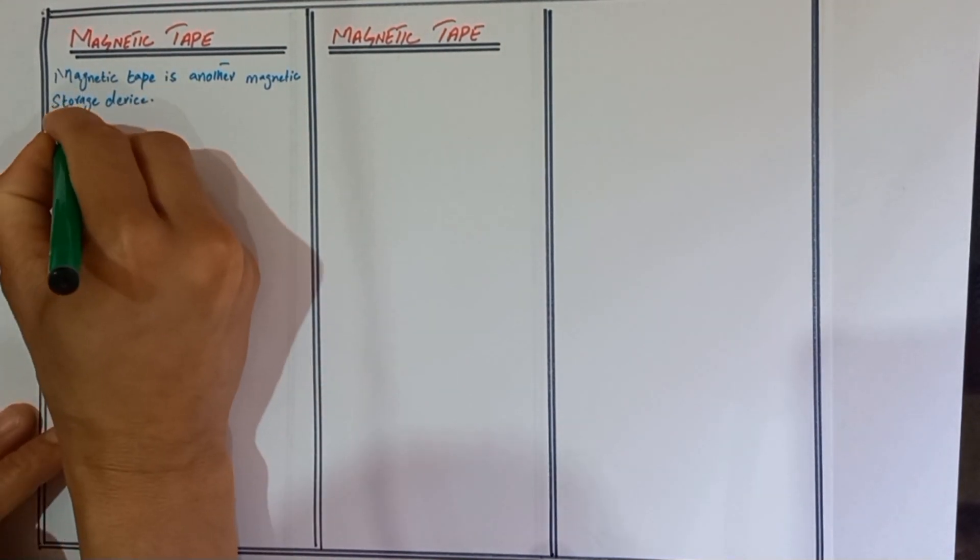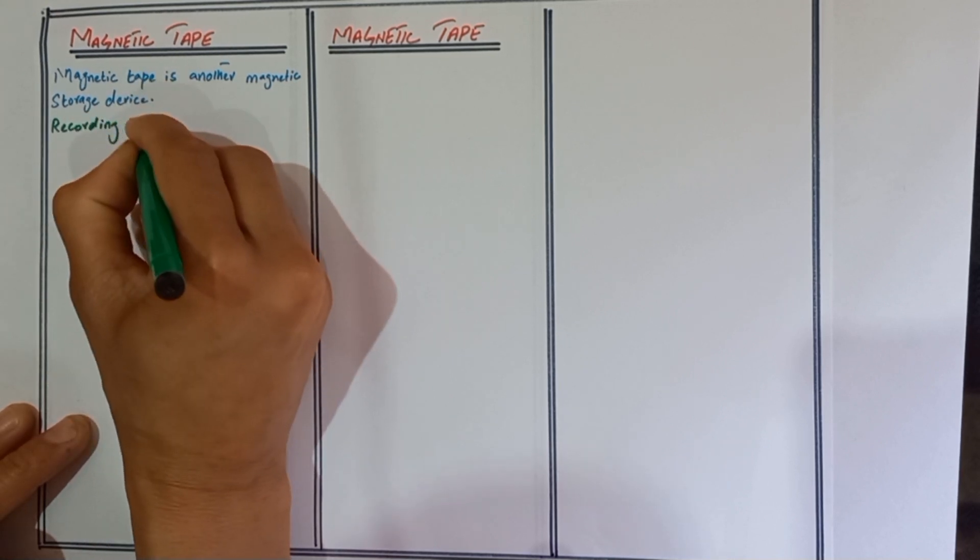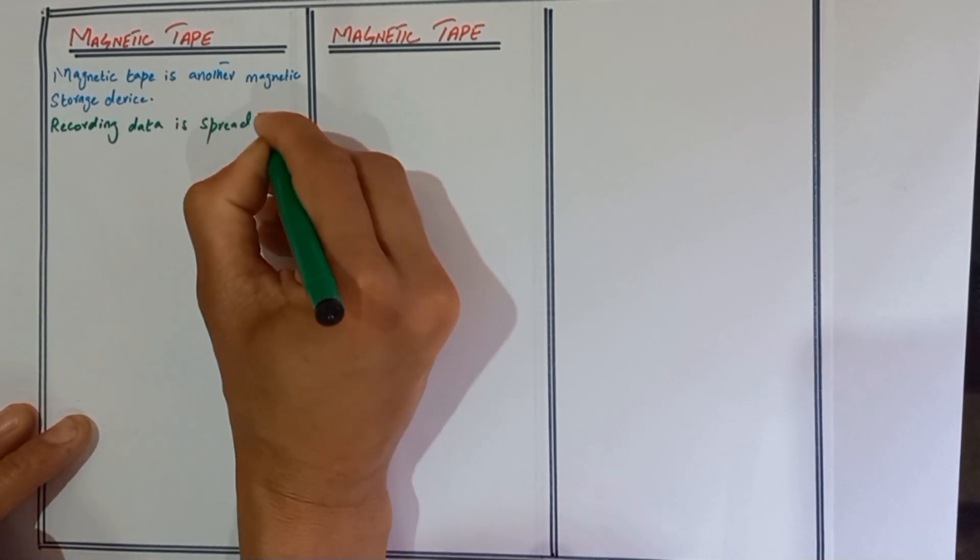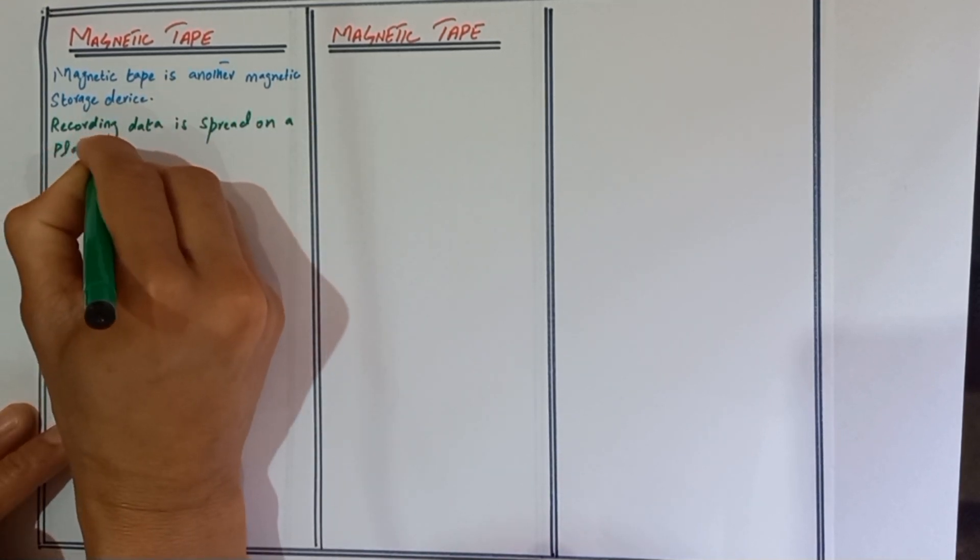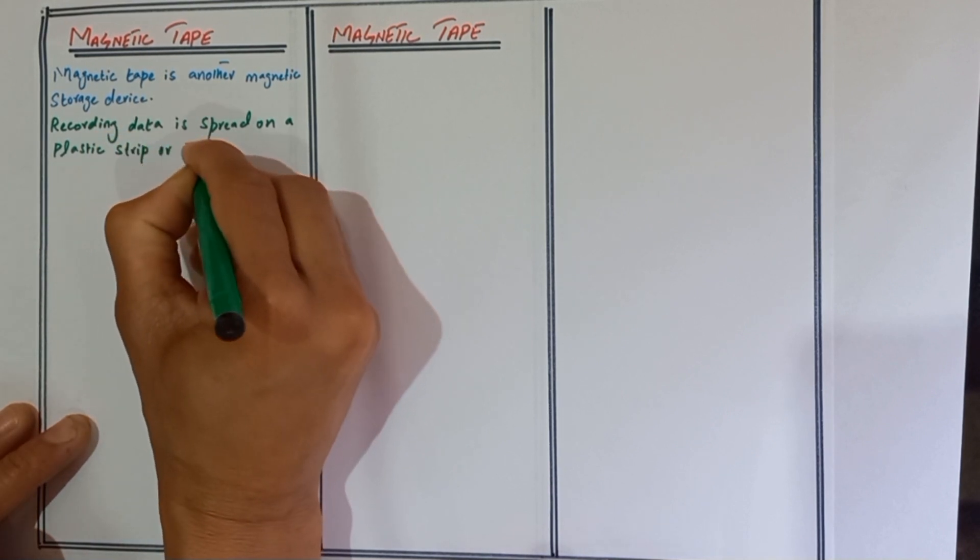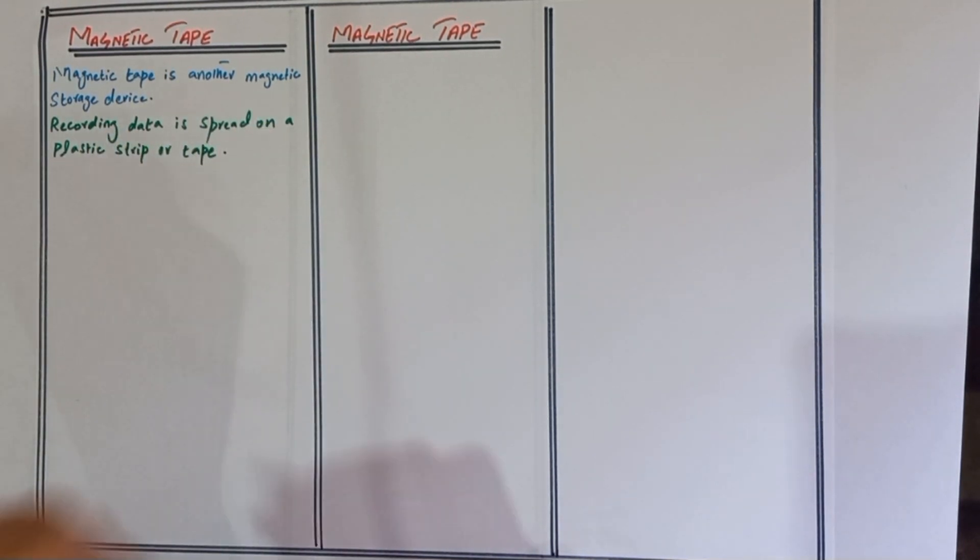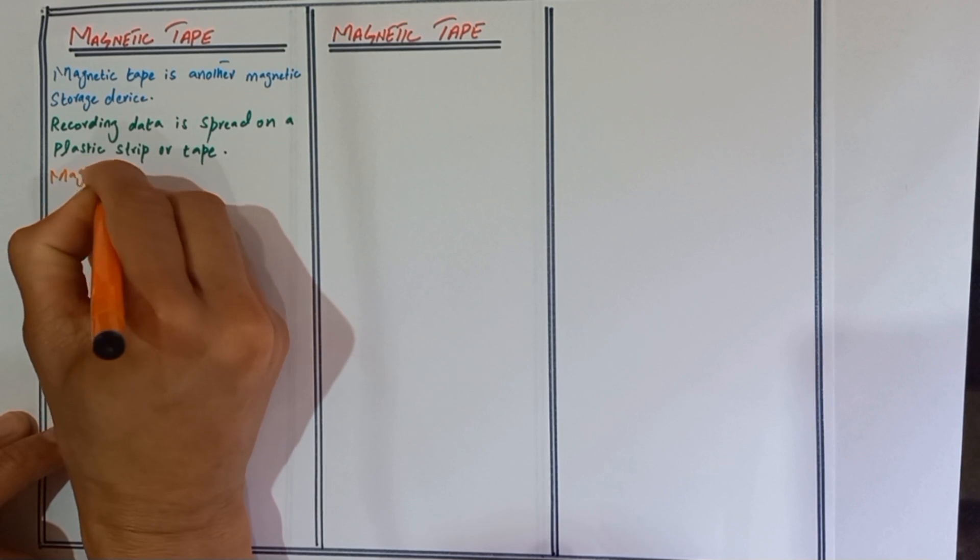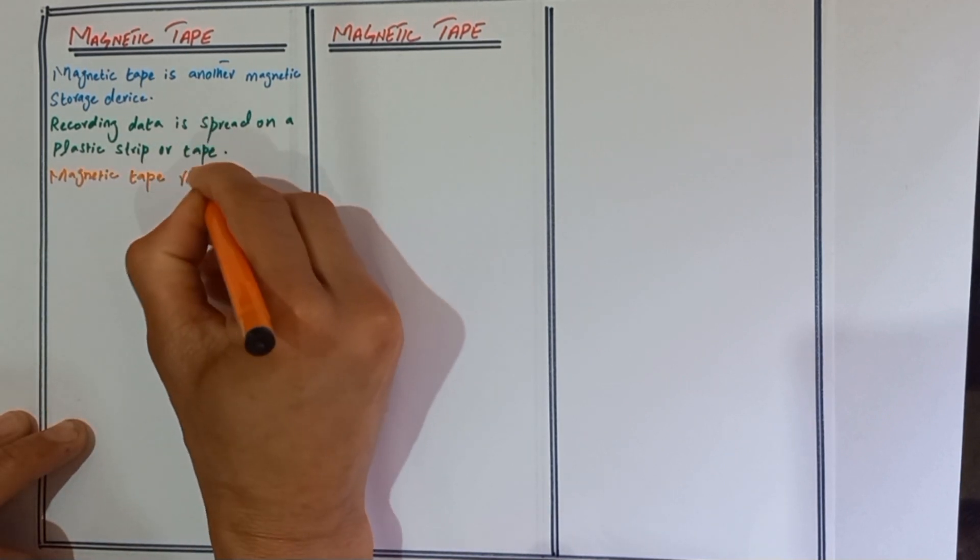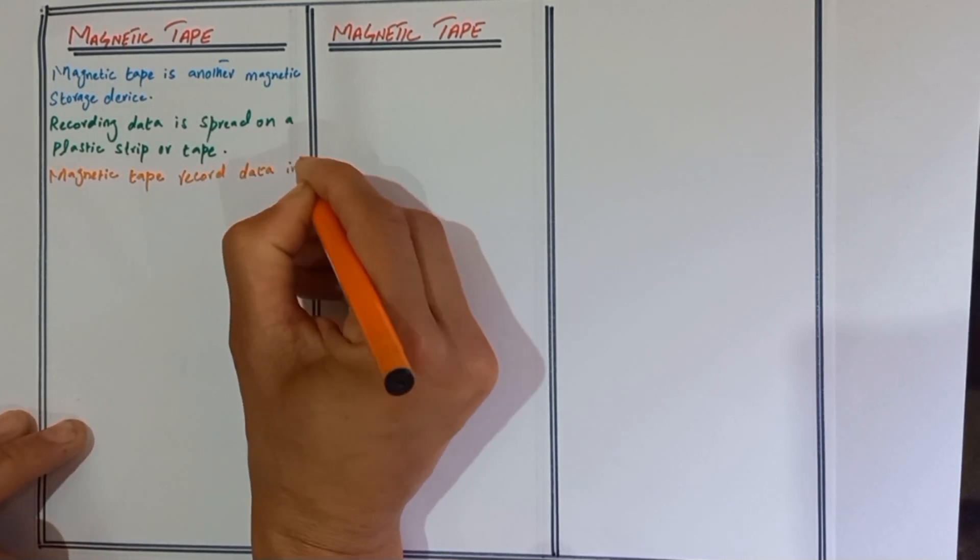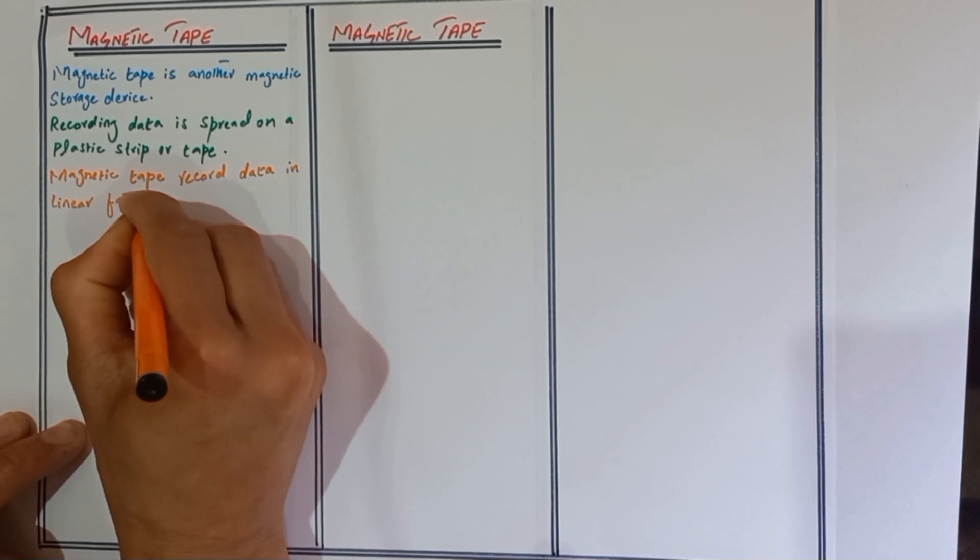Recording data is spread on a plastic strip or tape. Magnetic tape records data in linear expression along the length of the tape.